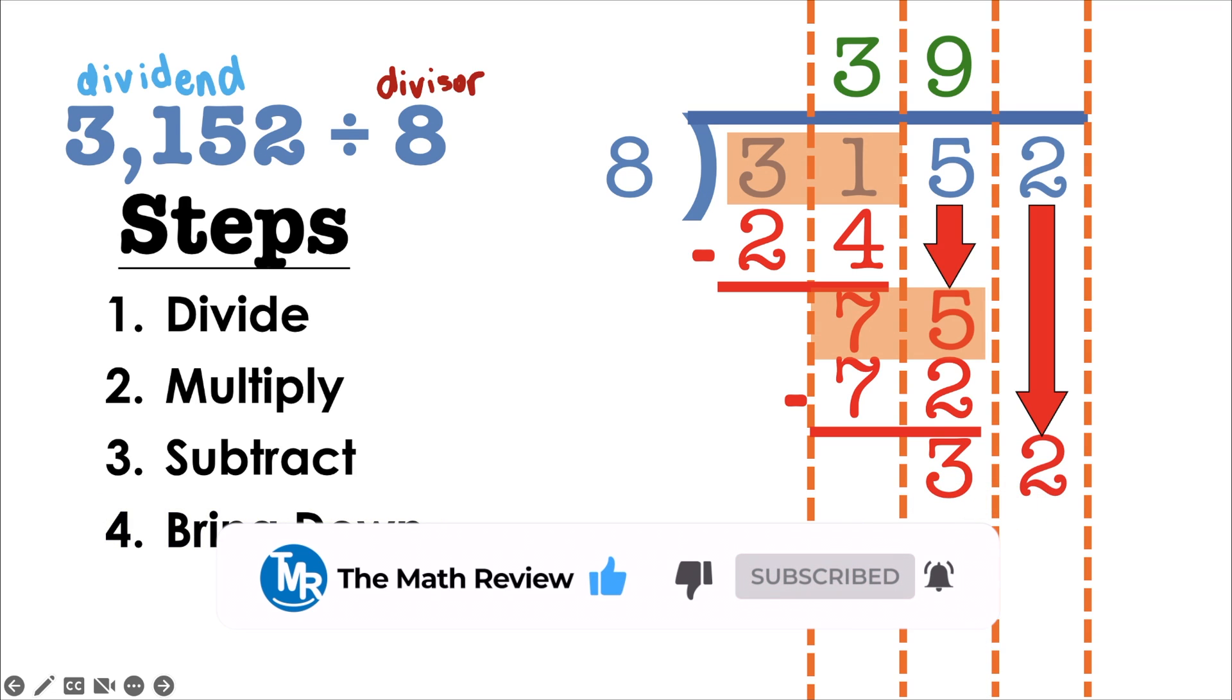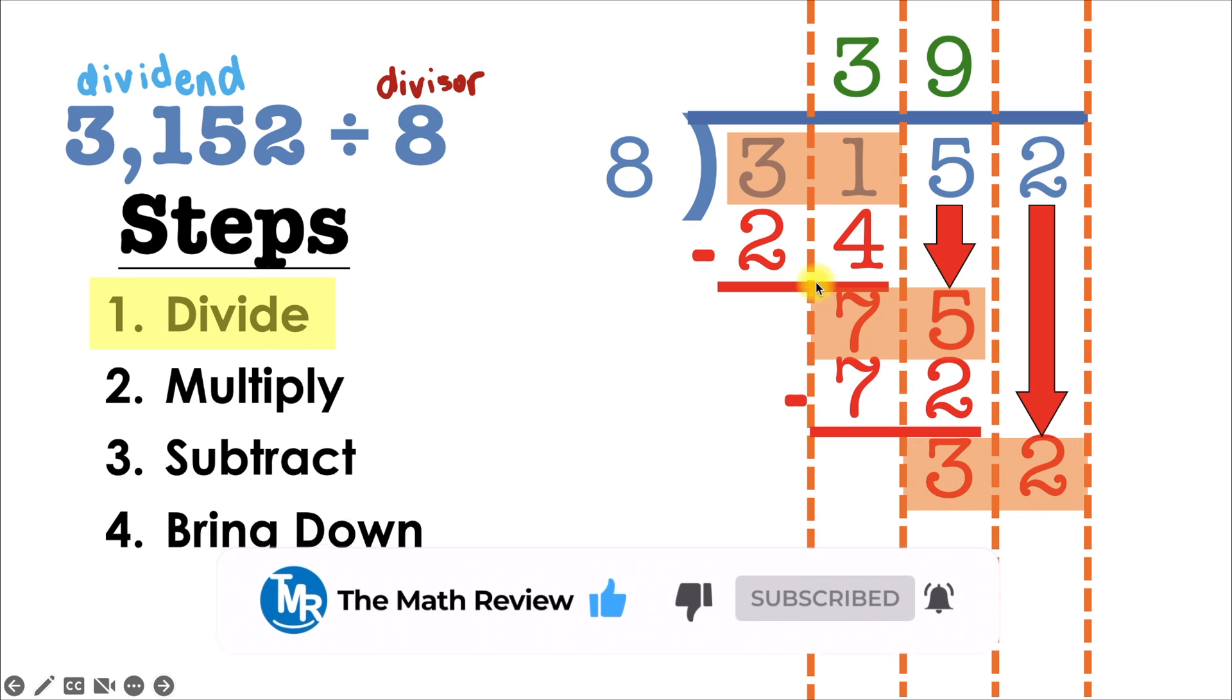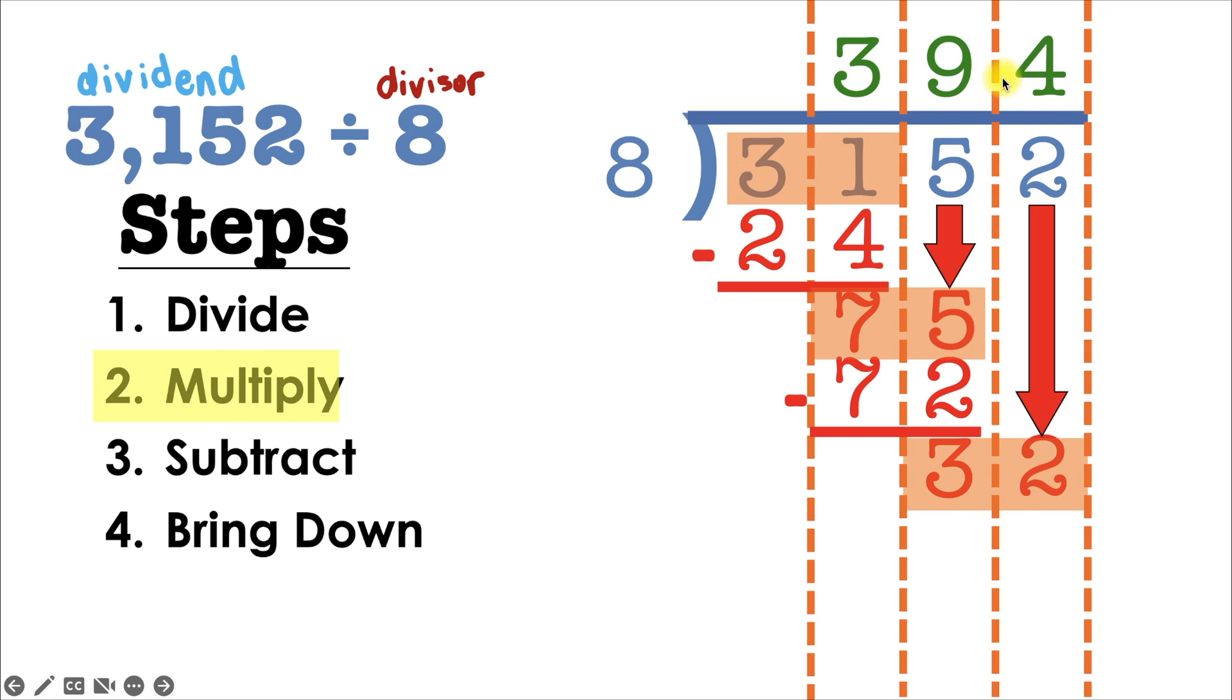And then we repeat the process. So let's divide 32 by 8. How many times can 8 go into 32? Well, that would be 4 times. Because when we multiply 4 times 8, that gives us 32. Then we'll subtract. 32 minus 32 will give us 0.